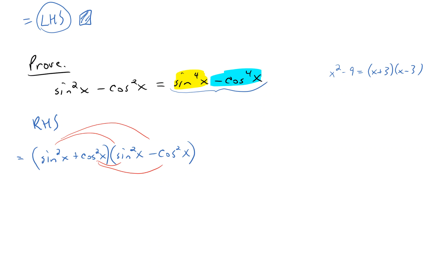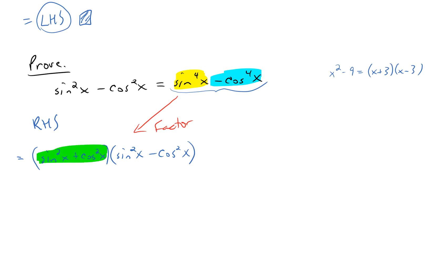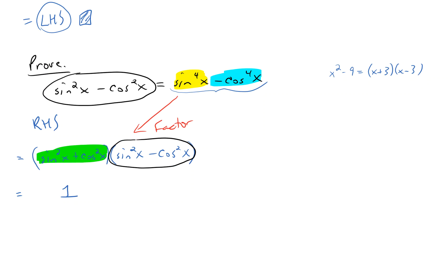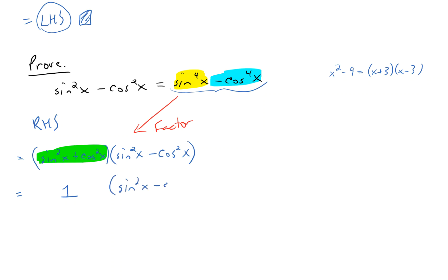We've factored the expression. Notice that sine squared x plus cosine squared x equals 1, and the second factor sine squared x minus cosine squared x is exactly what we want on the left-hand side. So what we have is 1 times sine squared x minus cosine squared x, which is the left-hand side. The right-hand side equals the left-hand side — the proof is complete.